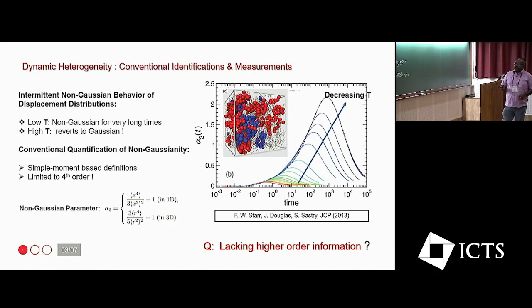So, dynamism is intermittent in this kind of glassy liquid. And this is our very favorite measure of non-Gaussian parameter to identify and to quantify the non-Gaussianity in the distribution.